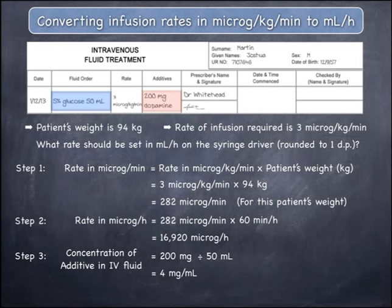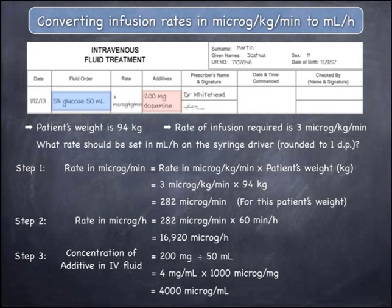This concentration has been expressed in milligrams per mil and should be changed to micrograms per mil, because the quantity in step two is expressed in micrograms rather than milligrams. To do this, multiply by 1,000 micrograms per milligram, giving a concentration of dopamine in the IV fluid of 4,000 micrograms per mil. For every 1 mil of IV fluid being infused, the patient will be receiving 4,000 micrograms of dopamine.